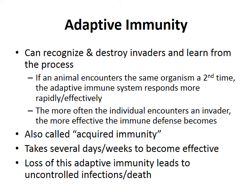Adaptive immunity takes several days to weeks to become effective — that's why we have our primary and secondary lines of defense: physical barriers and innate immunity. Loss of adaptive immunity leads to uncontrolled infections and death. With AIDS patients who can't produce the needed immune cells, effective adaptive immunity is lost and many eventually succumb to infection.